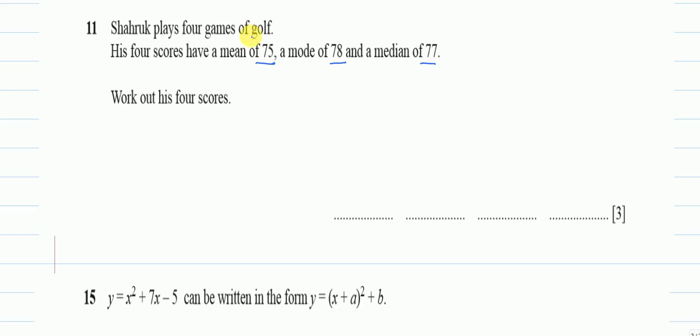Mean means if we add all the values and divide by the number of values, I will get 75. Mode means most of them are 78—it cannot be only one, so at least two or three or four of them are 78. Median means the middle number is 77.